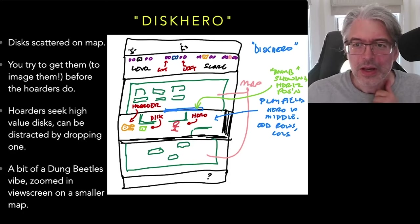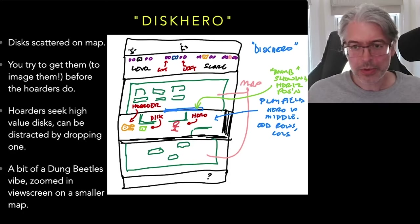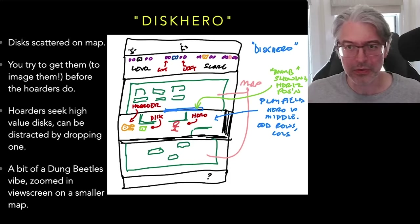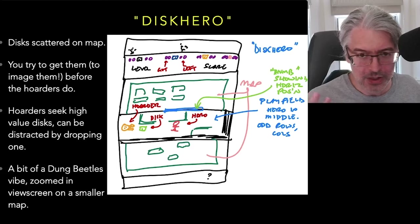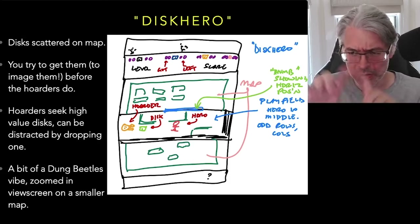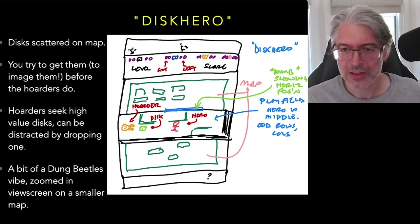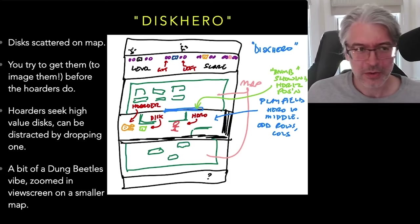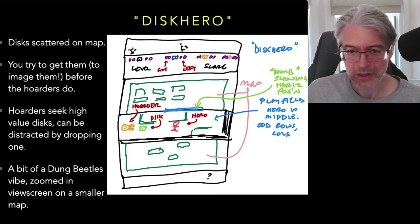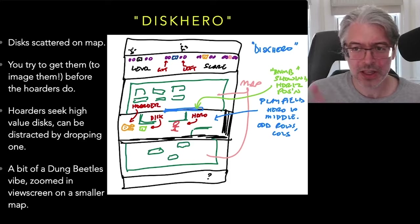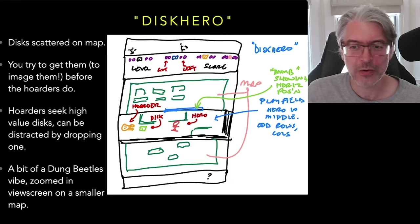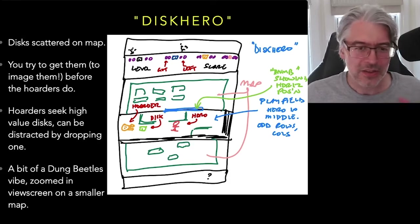The idea is there's a map with walls and scattered around the map are disks of varying values — four different types. Your goal is to go around and collect them. You're not under any direct threat, and you're not trying to eliminate anyone. You're just trying to collect things. The antagonists are the hoarders — they run around and grab the disks, and once they've grabbed them, you can no longer get them. That's the basic idea.